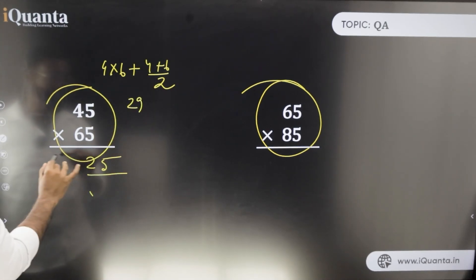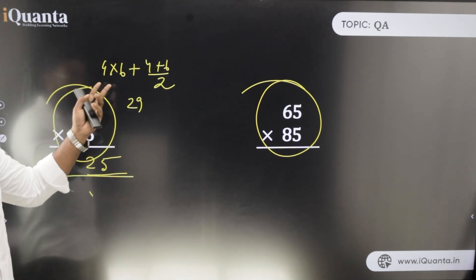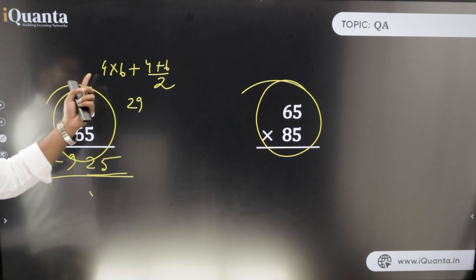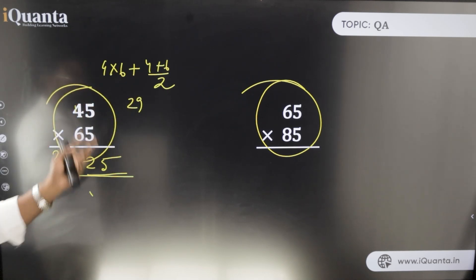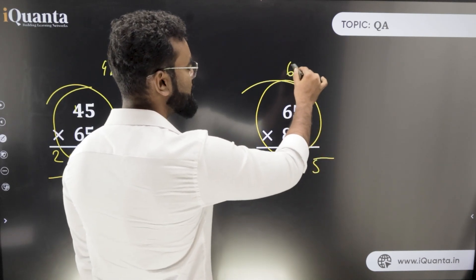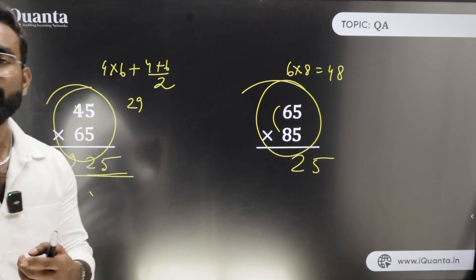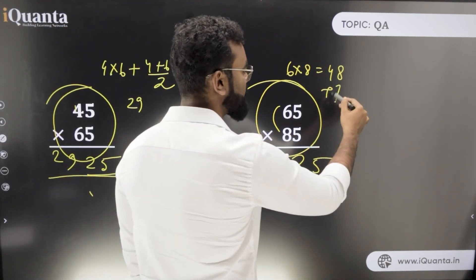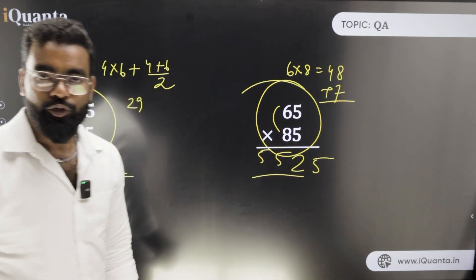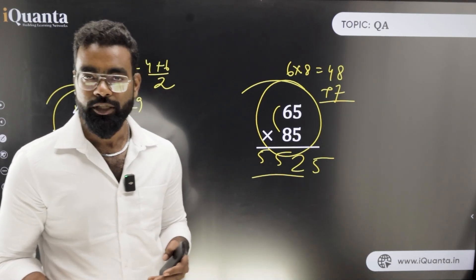So for 45 × 65 the answer is 2925. For 65 × 85: 6 × 8 = 48, average of 6 and 8 is 7, so 48 + 7 = 55, giving 5525. Remember: leading part = product of tens digits + average of tens digits.